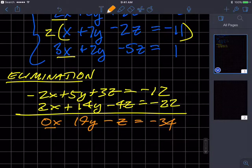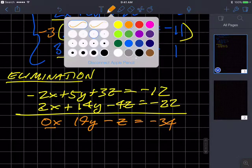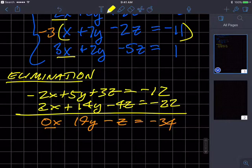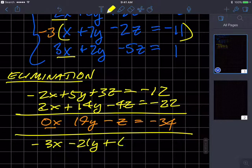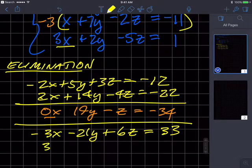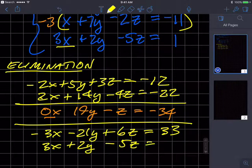Okay. Now I'm going to take this equation, multiply it times negative 3 and get an equation. So that's going to be negative 3x minus 21y plus 6z equals 33. And then I'm going to copy this last one down here, 3x plus 2y minus 5z equals 1.